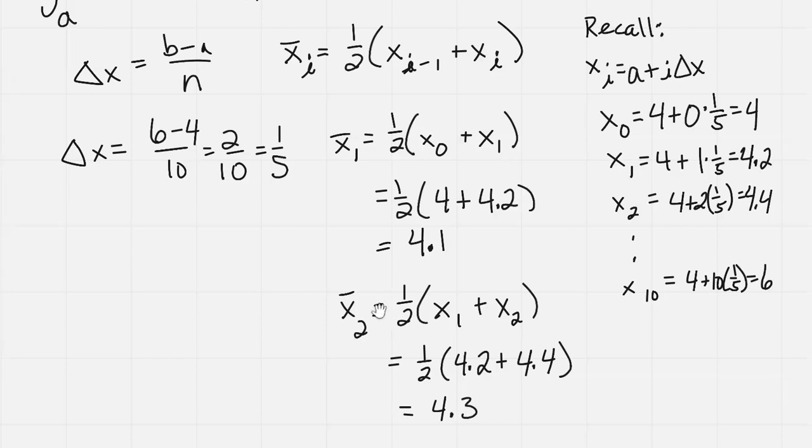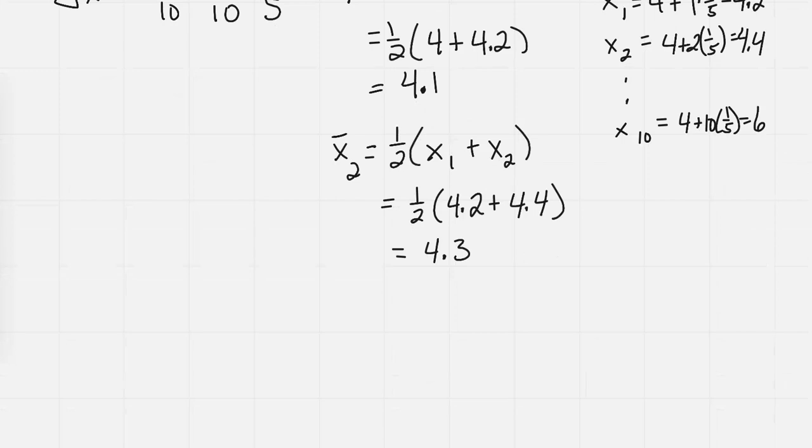And so we go all the way down to x sub n, which in our case n is 10, so I'm going to calculate all the way down to x bar sub 10. That means using my little formula, it's 1 half times x sub 9 plus x sub 10, which is 1 half - my x sub 9, I don't have it up there, but it would be 5.8, and my x sub 10 was 6, so we can see that midpoint would be 5.9.